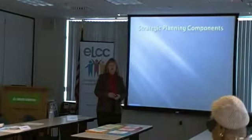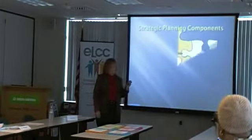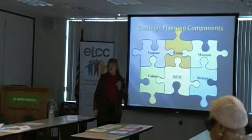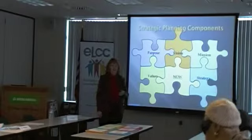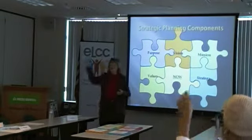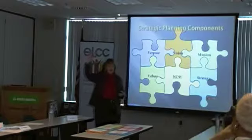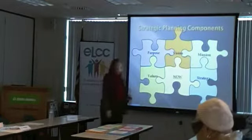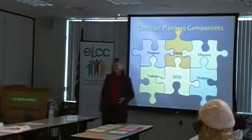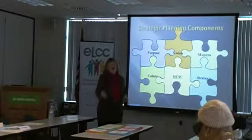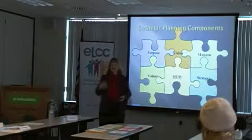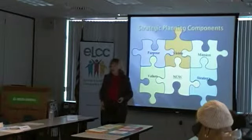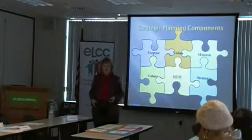There are six components in Sue Gunther's definition of strategic planning, which is a little different than the textbook. The first thing is purpose — defining why you're a business. Then we have the vision and the mission, values, and then devising the strategy.